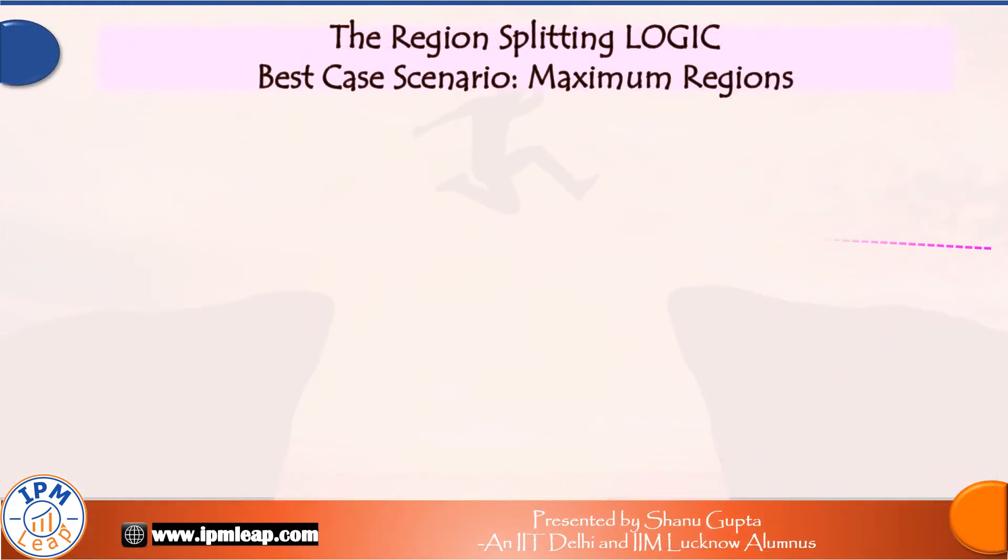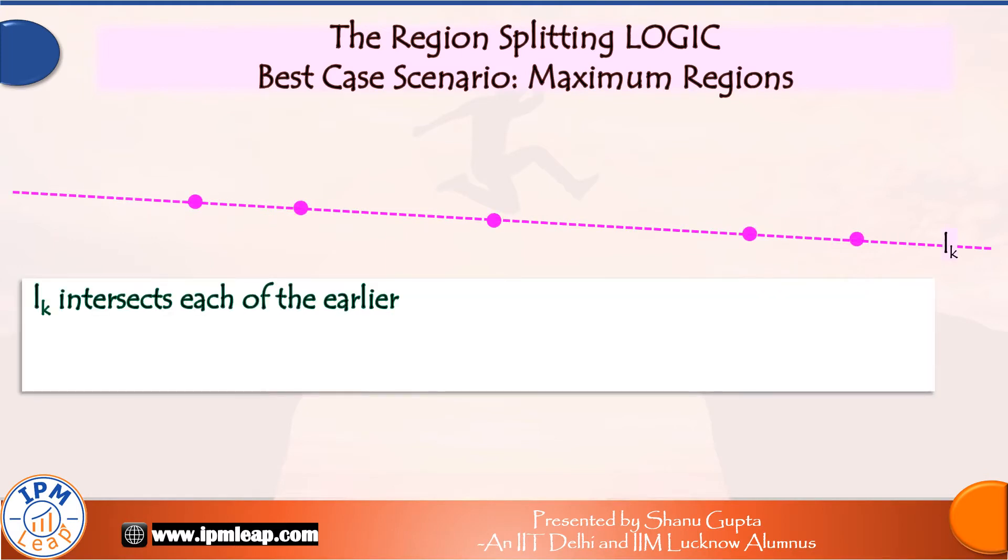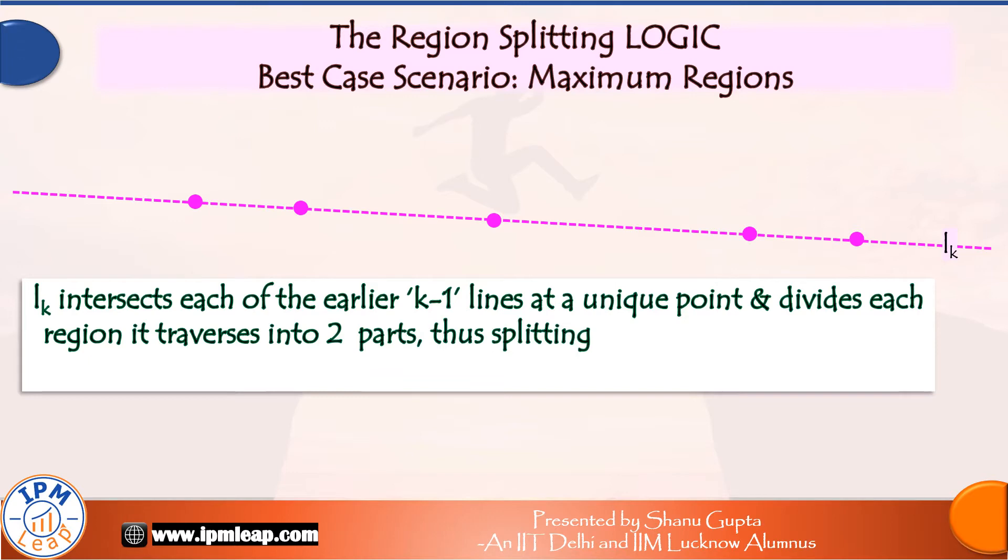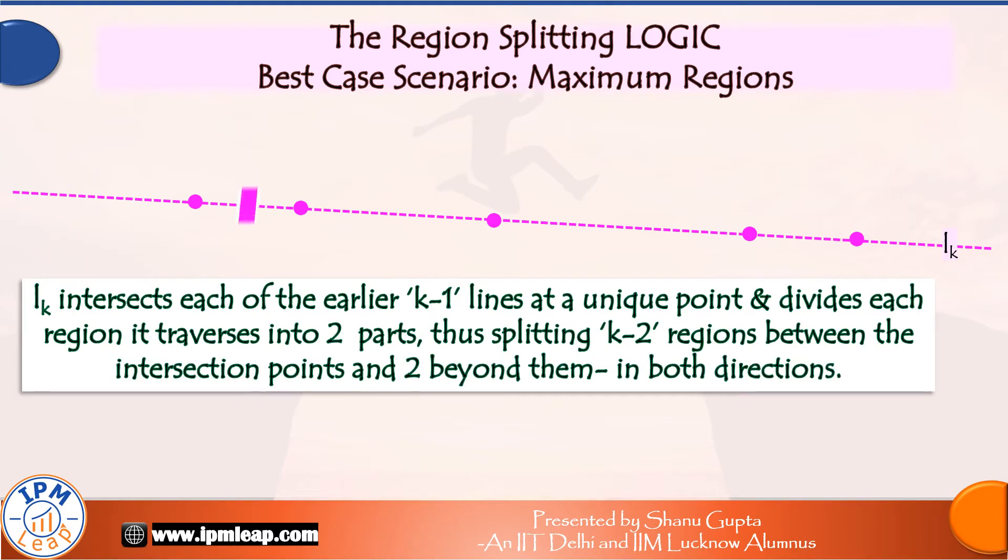Here is a visual representation of what we have discussed so far. Line number K intersects each of the earlier K-1 lines at a unique point and divides each region it traverses into two parts, thus splitting K-2 regions between the intersection points and two beyond them in both directions.